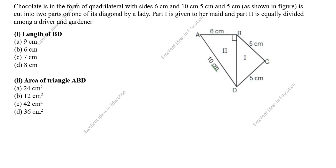Hi students, welcome to my channel, Excellent Ideas in Education. Today we are going to solve this case study problem. A chocolate is in the form of a quadrilateral with sides 6 centimeter, 10 centimeter, 5 centimeter, and 5 centimeter as shown in the figure.